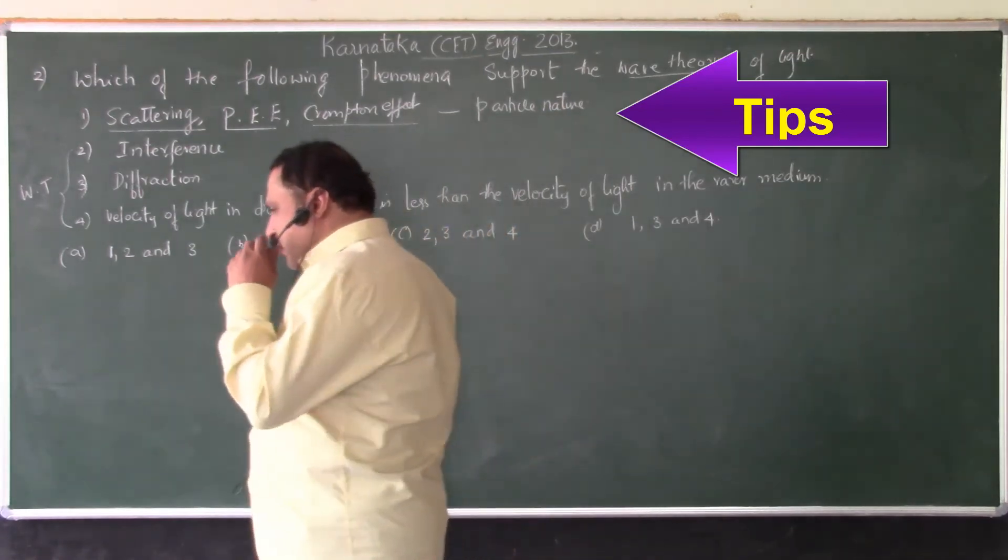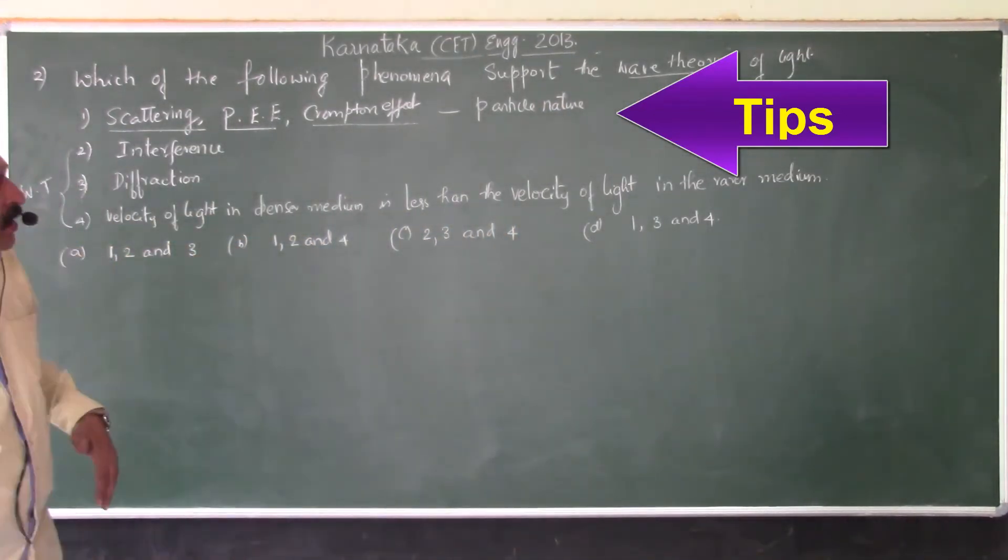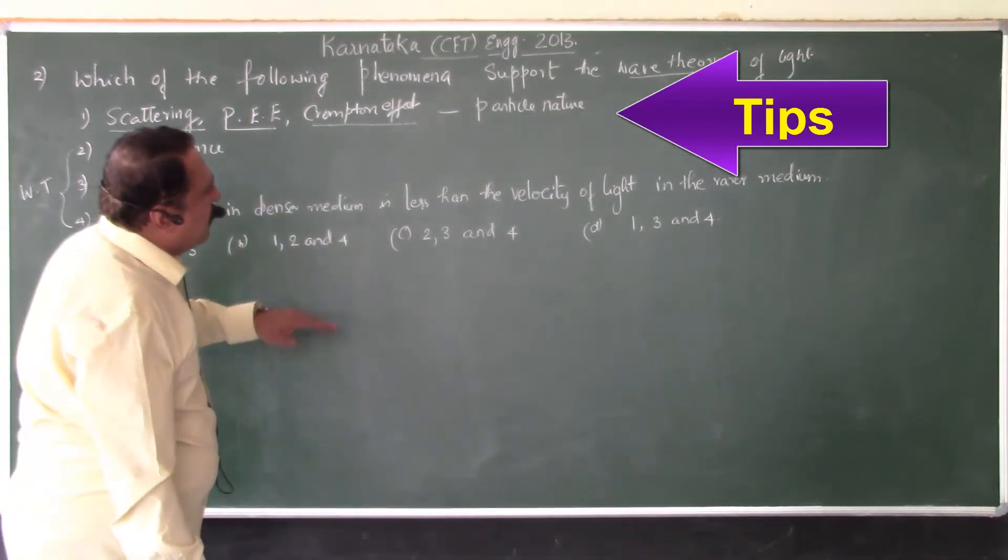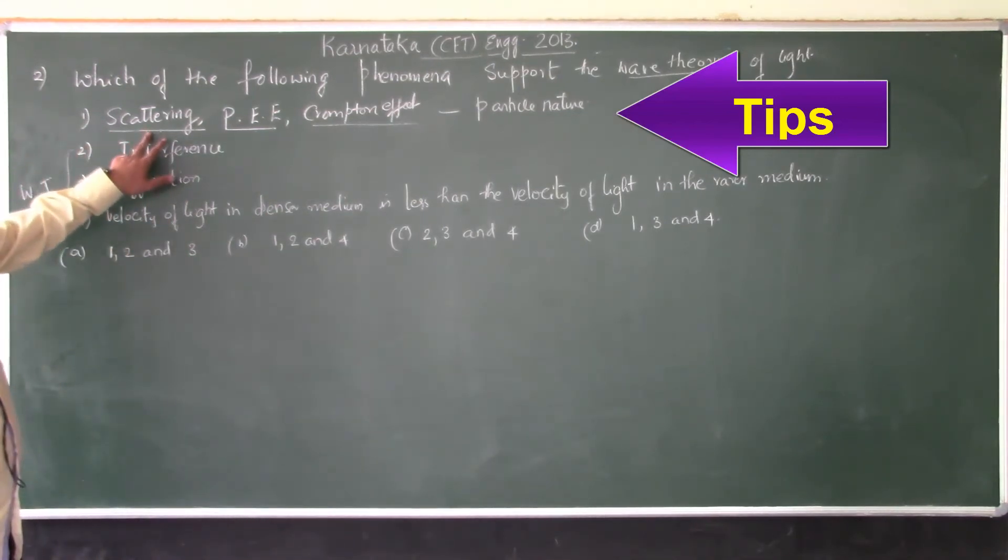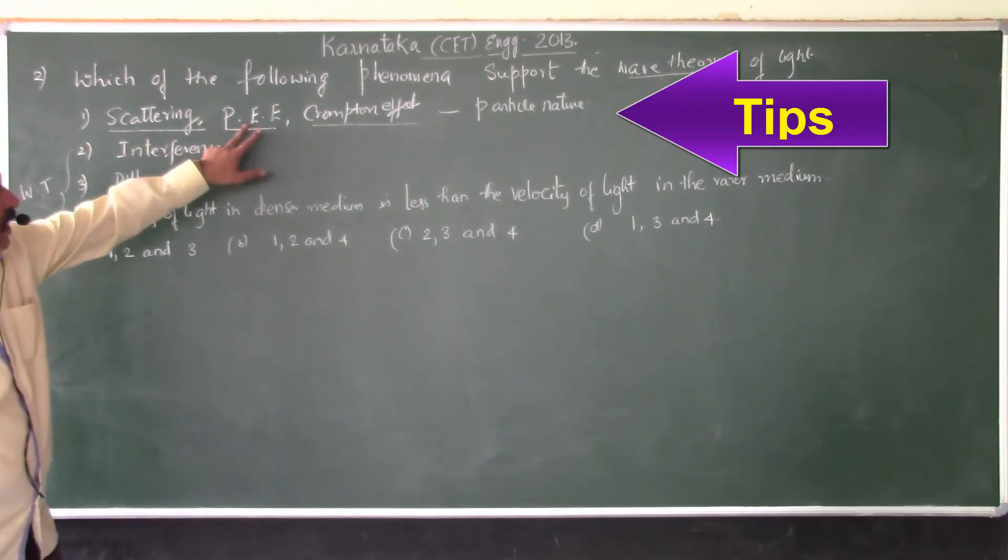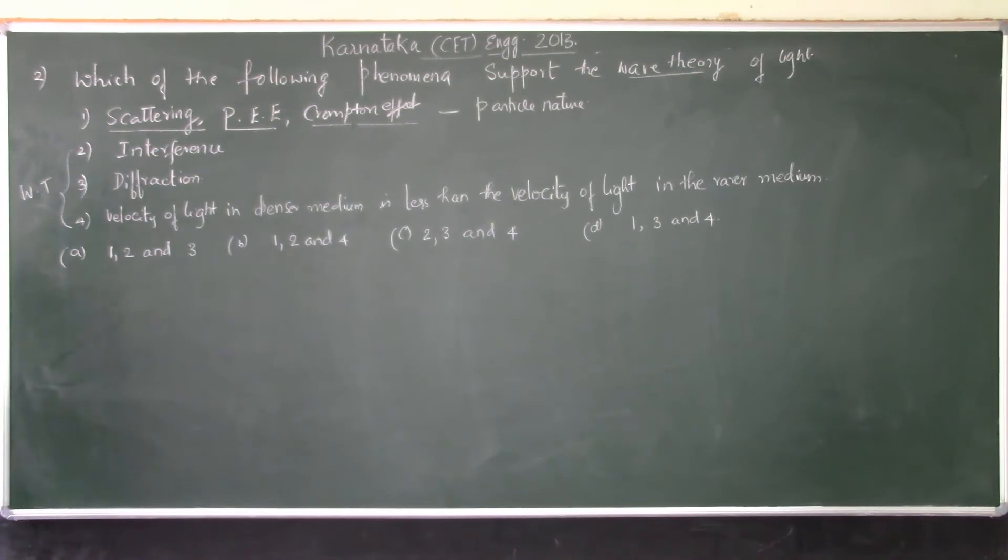So in case if a question is asked, name the phenomena which support particle nature of light, you can give the answer as scattering, photoelectric effect, Compton effect. Give the phenomena which supports electromagnetic nature of light? Answer is polarization.